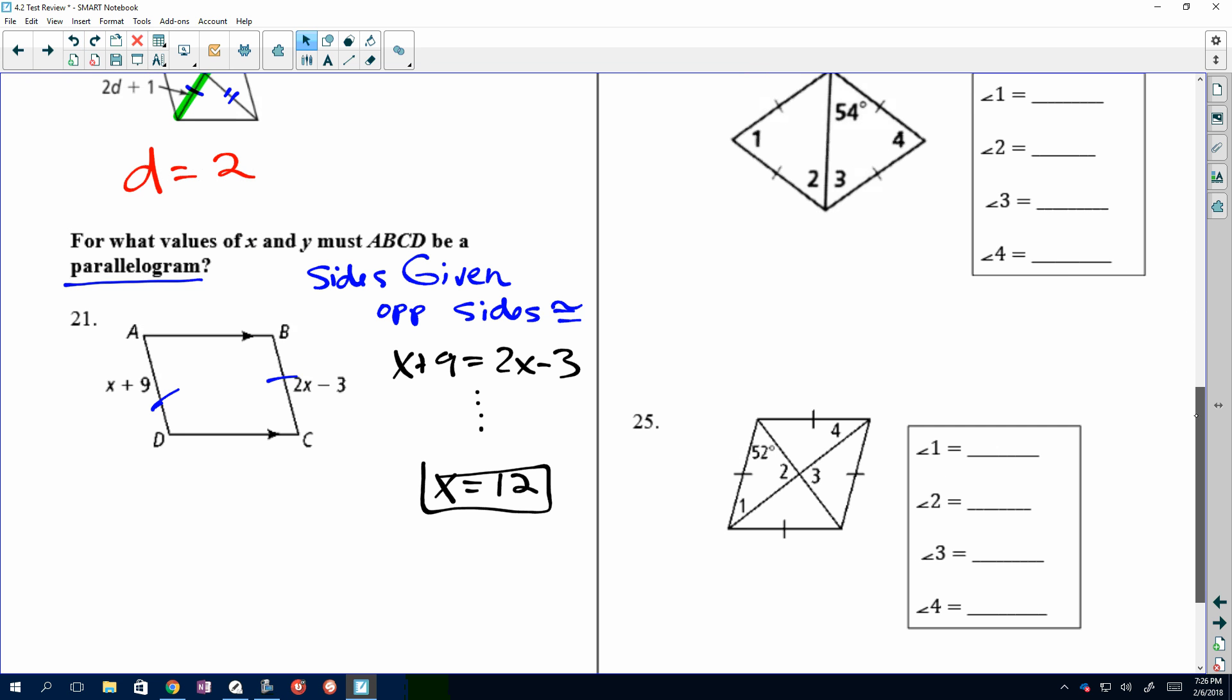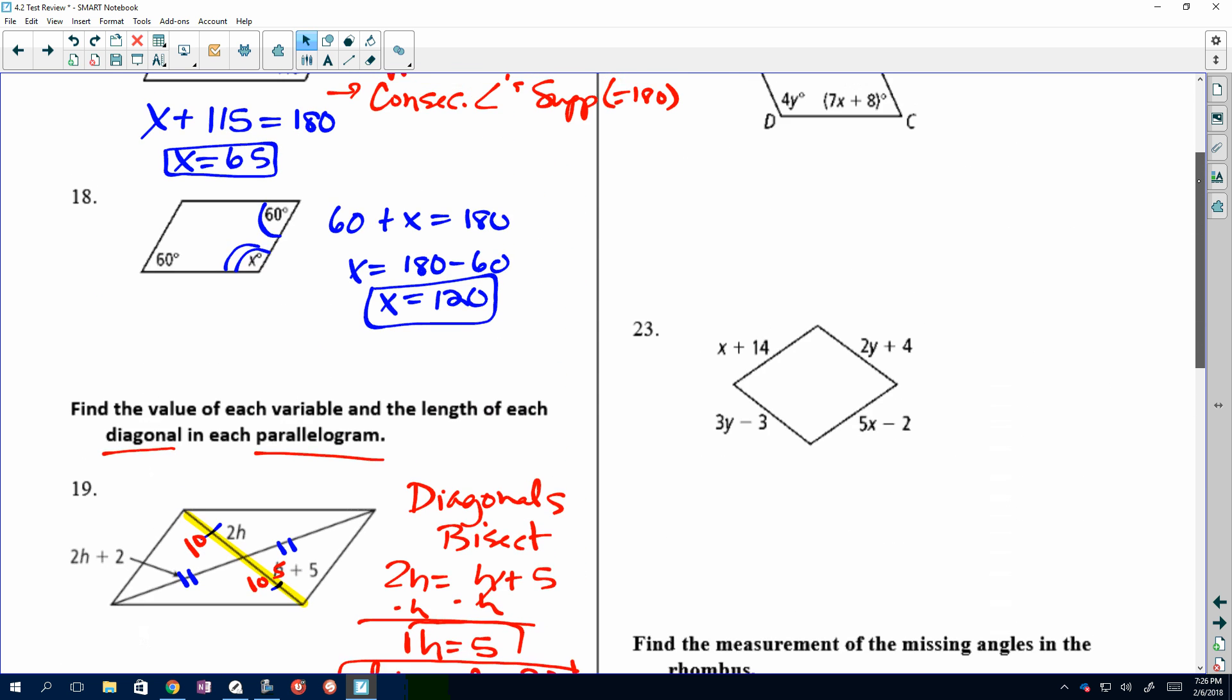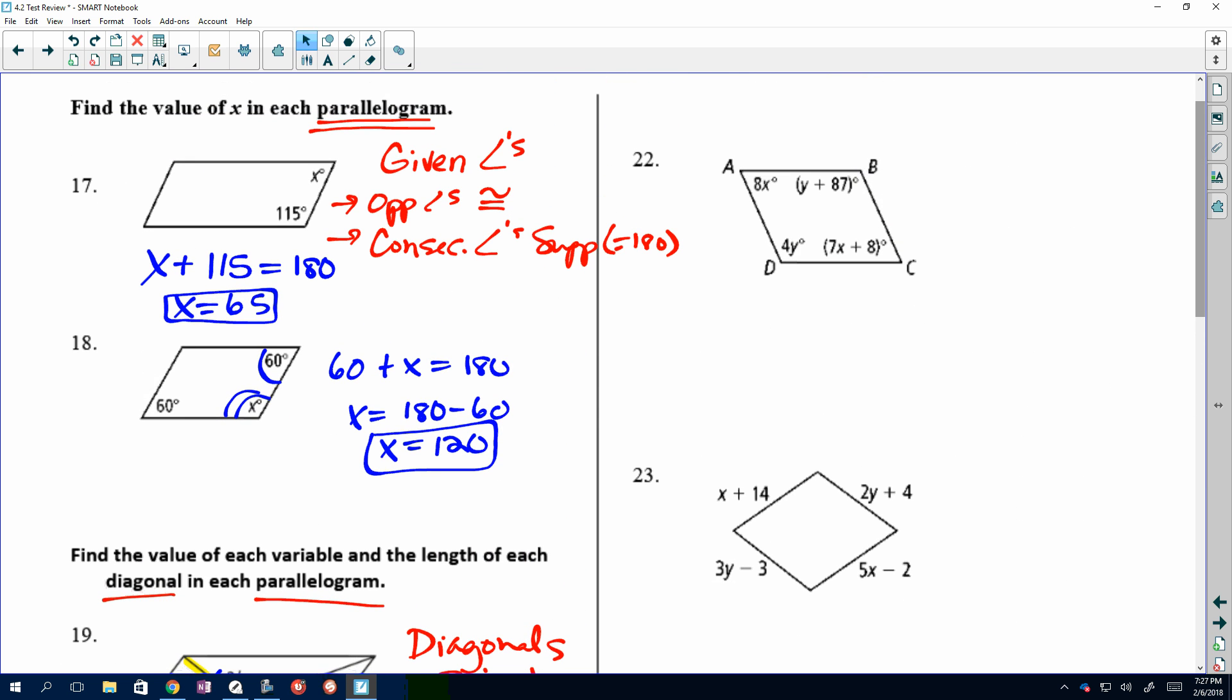When we come back to 22, we're still dealing with the parallelogram. Still dealing with the parallelogram. I know I didn't state it, but because it said it in the instructions for number 19 and number 21, we're still dealing with the parallelogram. So, hopefully, you recognize we have angles labeled in the interior. So, we have two properties that we talked about, just like on number 17, which is opposite angles congruent, and consecutive angles supplementary.